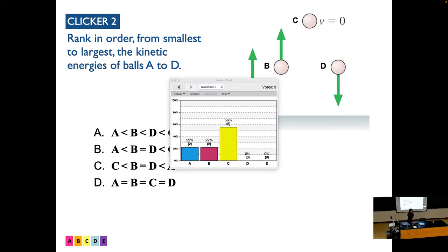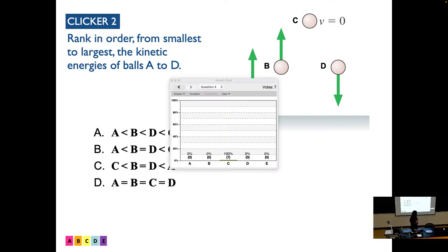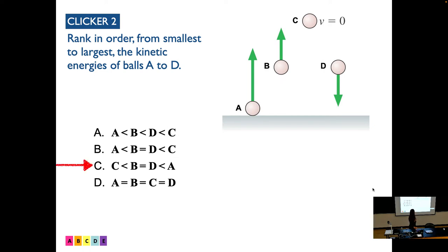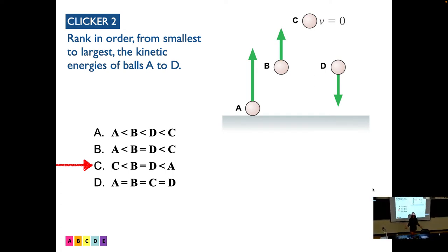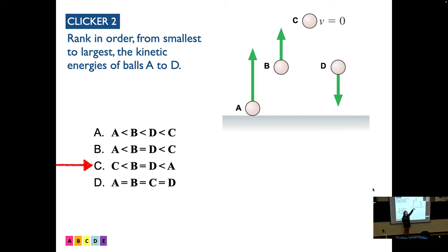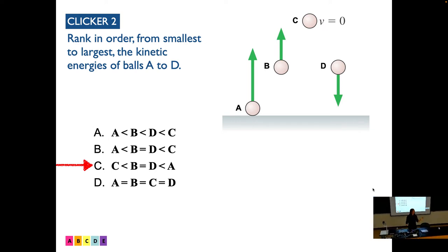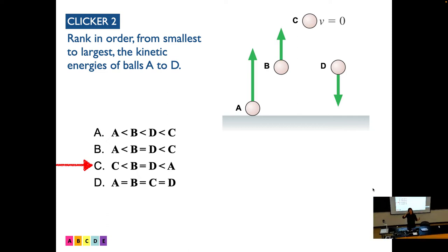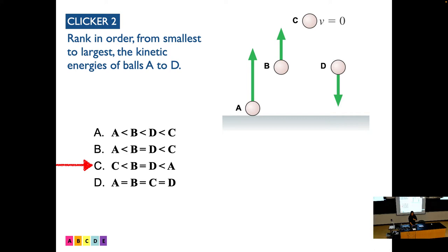The answer is c. We're really just looking at speed because all these balls are the same mass. At the peak, speed is smallest; at c, speed is largest. Interestingly, b and d have to be the same because they have the same speed magnitude — there's a symmetry to projectile motion that makes that true. If you eyeball the velocity vectors, they look about the same. B and d have the same kinetic energy, even though they point in different directions, because we square the speed.